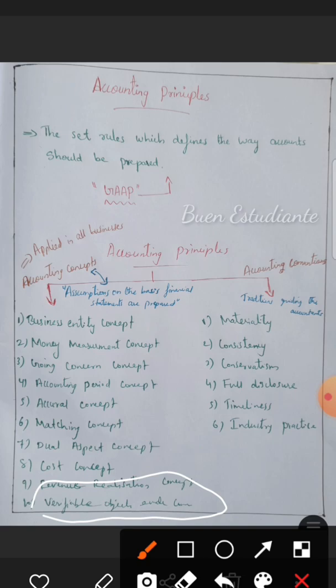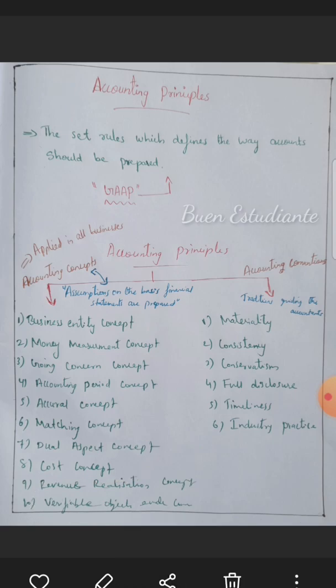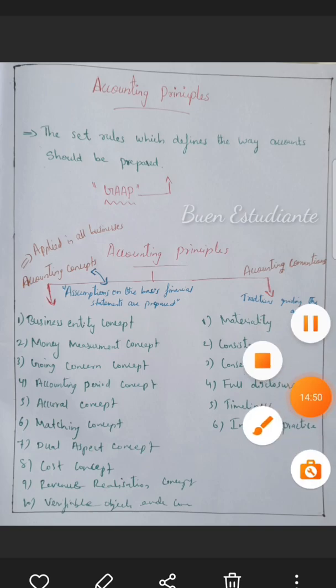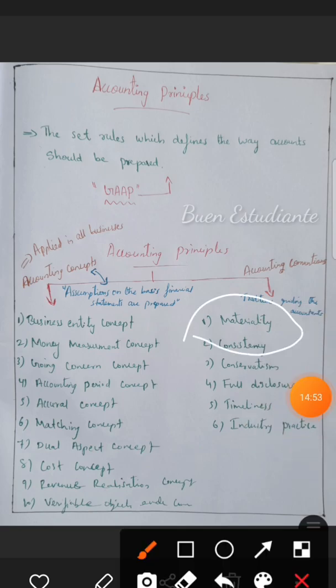Moving to accounting conventions, the first is Materiality. Under this convention, only material — that is, significant — items need to be recorded in detail. Immaterial or irrelevant items can be excluded from detailed recording.